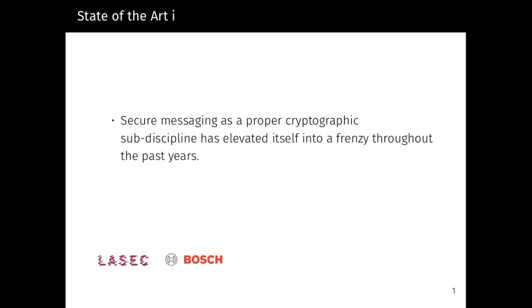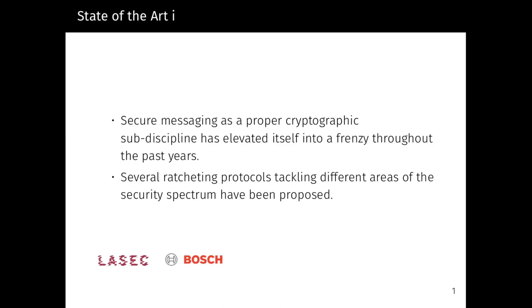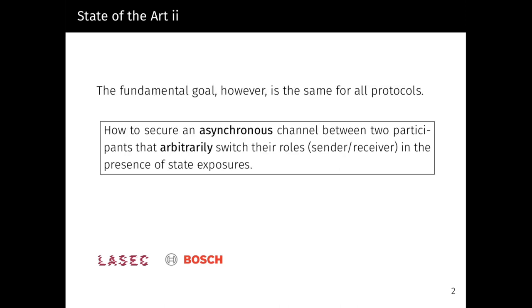Although messaging applications permeate our everyday life basically everywhere around the globe, the cryptographic sub-discipline of secure messaging has only been gaining traction over the past few years with the emergence of several ratcheting protocols with varying security properties. The overall goal, however, for all of these constructions remains identical: How to secure an asynchronous channel between two participants that arbitrarily switch their roles in the presence of state exposures. In this context, asynchronous means that both users do not need to be online in order to communicate, hence the sending and reception of messages may be randomly interleaved. Nevertheless, this does not mean that the order of messages from a user can be mixed or that messages can be dropped.